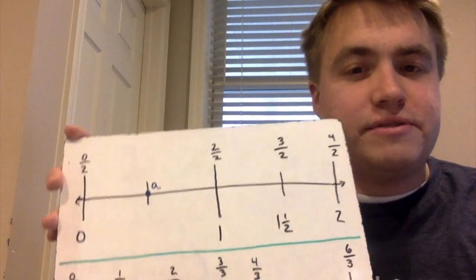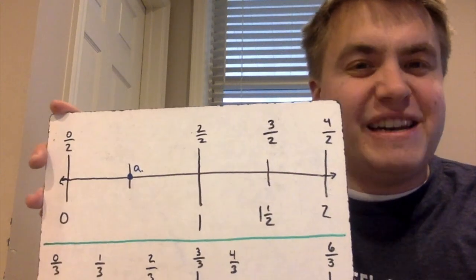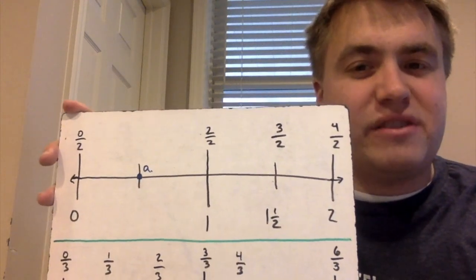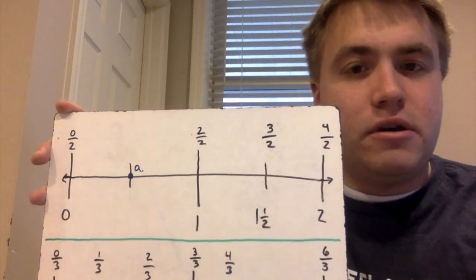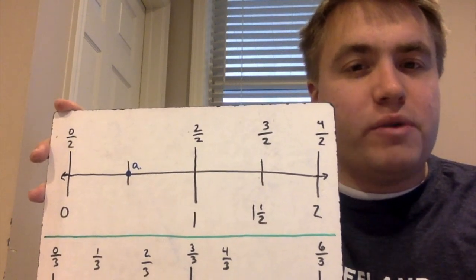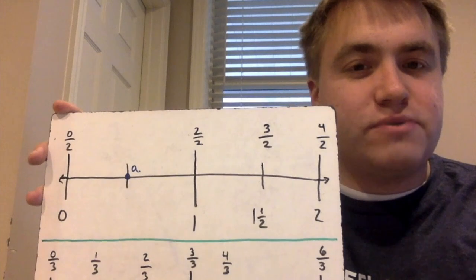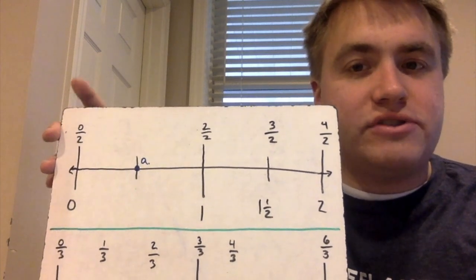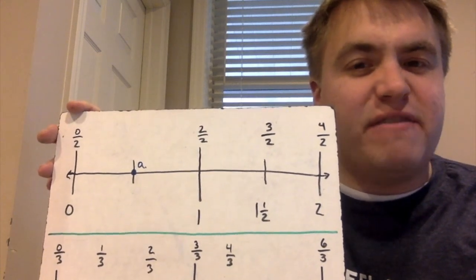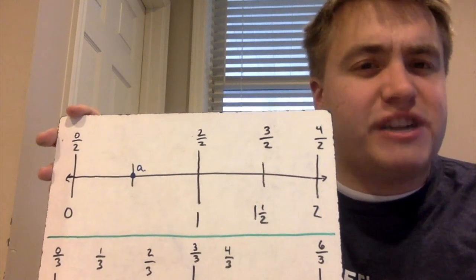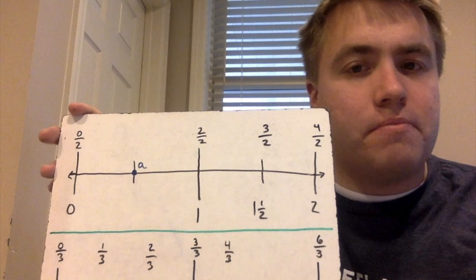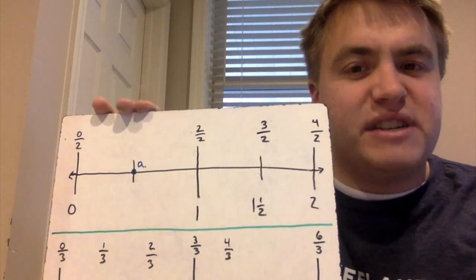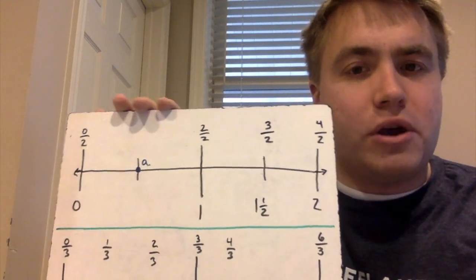Moving on now to another number line — notice this number line is a little different than the first one. My first one only went up to one; this one goes up to two. Notice starting over here, I have zero-over-two, which again represents zero, and I have a missing number here in the middle.